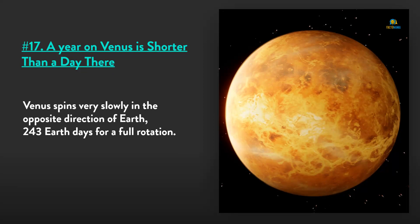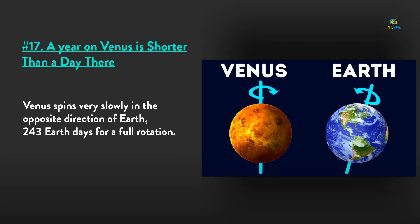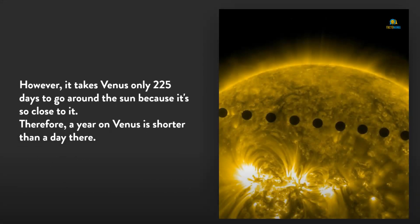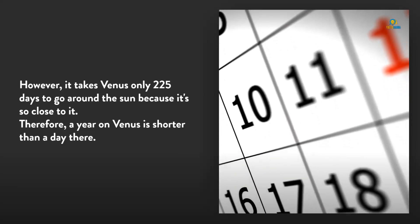Number 17: A year on Venus is shorter than a day there. Venus spins very slowly in the opposite direction of Earth—243 Earth days for a full rotation. However, it takes Venus only 225 days to go around the sun because it's so close to it. Therefore, a year on Venus is shorter than a day there.